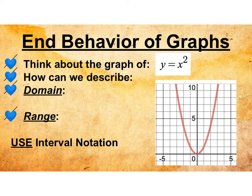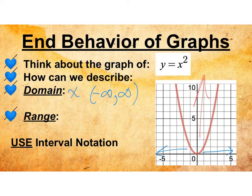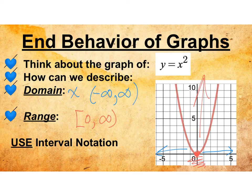Thinking about the graph of y equals x squared, we want to think about how we can describe the domain using interval notation. Remember that x is our domain. Going to the right towards positive infinity and to the left towards negative infinity, we use soft brackets because we don't want to close infinity. So the domain becomes negative infinity to positive infinity. Switching to range — the y value goes up but not down — it touches 0, so that's included with a hard bracket, giving us 0 to positive infinity.